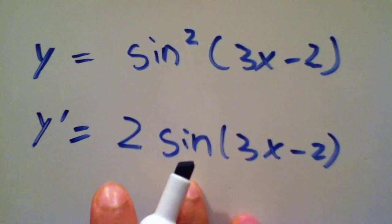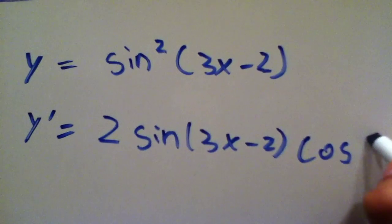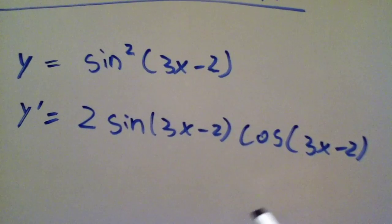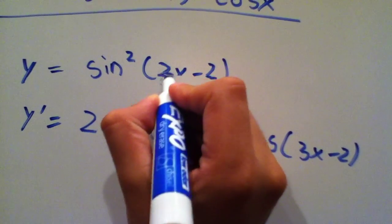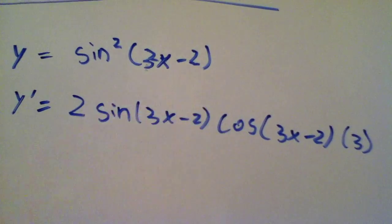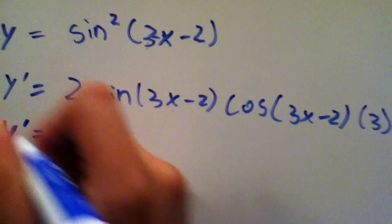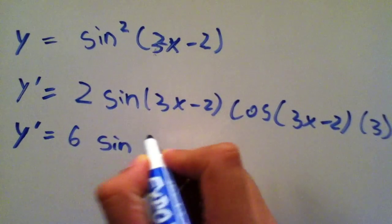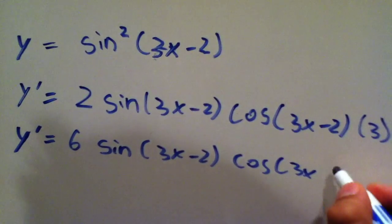The next part is to differentiate sine x, whose derivative is cosine, so multiply by cosine of 3x minus 2, then multiply by the derivative of the innermost function, 3x minus 2. The derivative of 3x minus 2 is just 3, because that's the constant multiple rule. Simplifying, y prime becomes 6 sine(3x minus 2) cosine(3x minus 2).